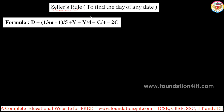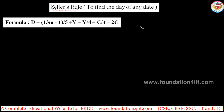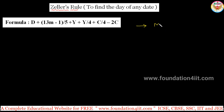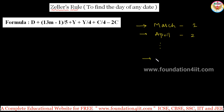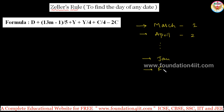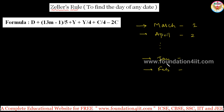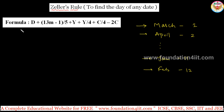Zeller was a mathematician who gave this rule to find the day of any date. Three things you need to remember. According to his rule, the month will start from March, not from January. March is 1, April is 2, and so on. After December comes January. The last month is February. So January is 11 and February is 12.